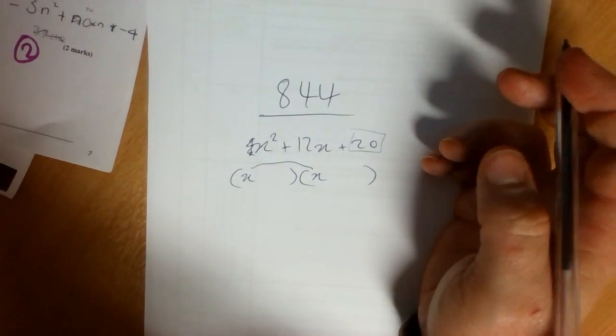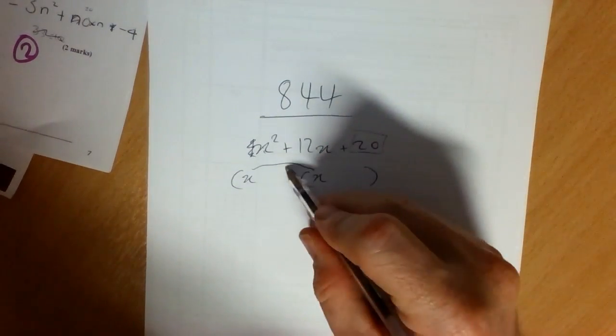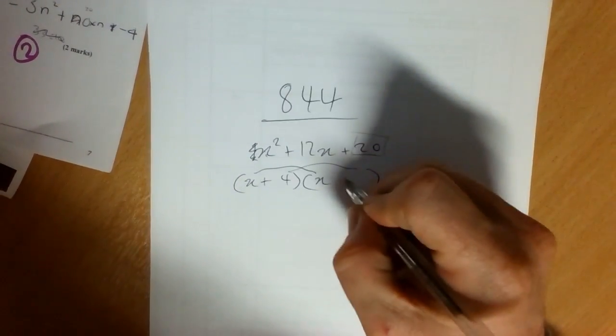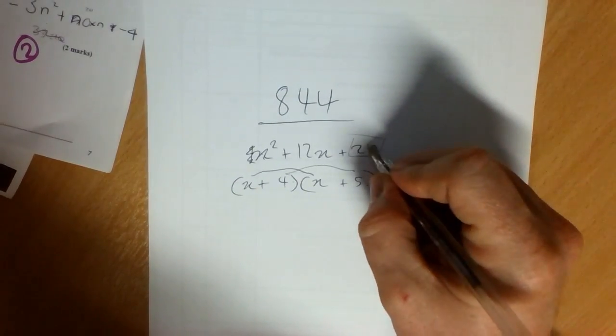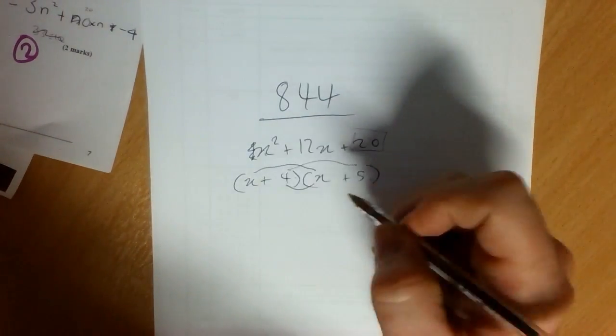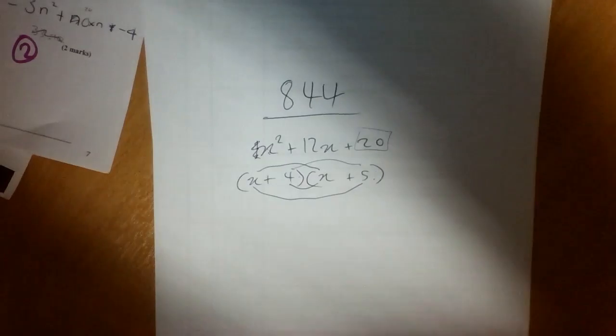So left eyebrow, it's going to be x times x, that'll give x squared. How am I going to get a 20? Just try different combinations. Try 4 times a 5, that'll give 20 for the right eyebrow. Nose will be 4x, mouth will be 5x, they'll combine to give 9x.